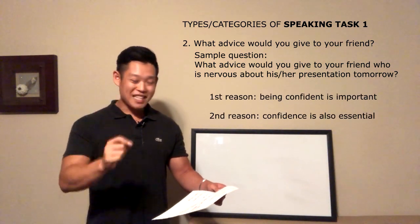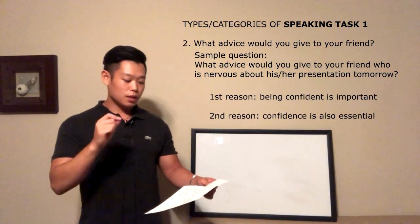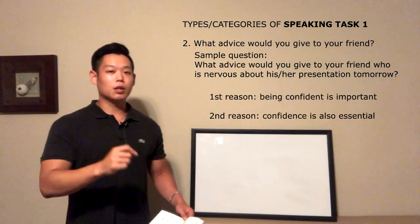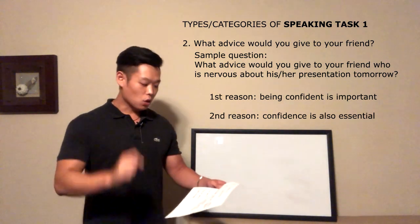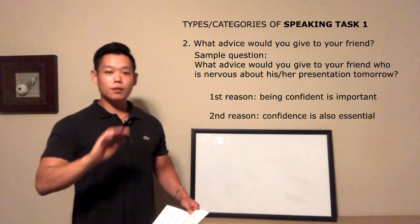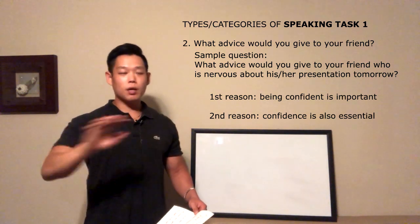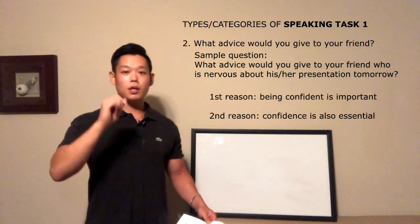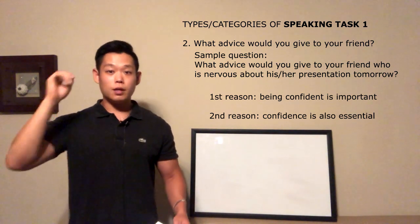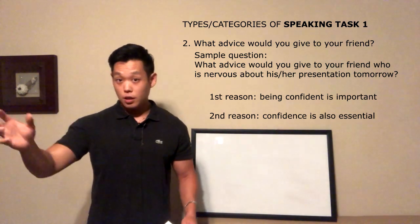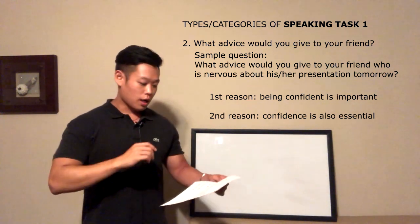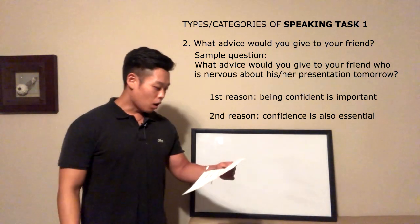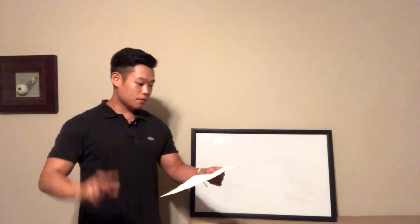For this advice-type question, the first reason is 'being confident is important' and the second reason is 'being confident is also essential.' For any general 'what advice, what recommendation, or what suggestion would you give to your friend' question, your opinion will be to tell your friend to be confident, and your two reasons will be 'important' and 'essential.'